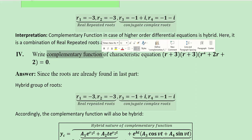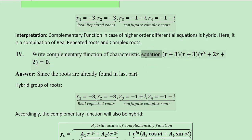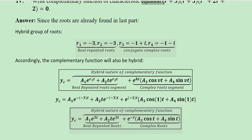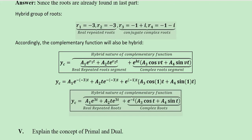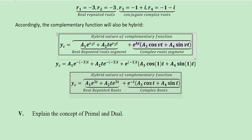The fourth part is about the complementary function based upon this same characteristic equation. Using those roots, we build a hybrid complementary function. The first two terms are based on the real repeated roots formula, and the remaining terms use the complex root formula. After substituting the values of R1, R2, H, and V, the final simplification gives us the complementary function, which is definitively hybrid in nature.